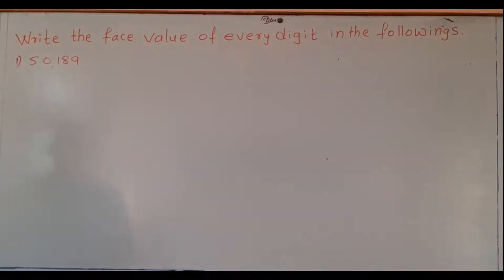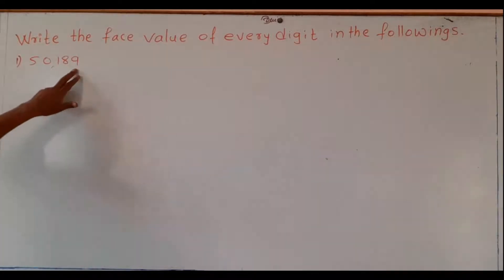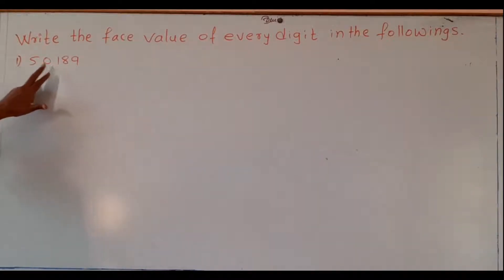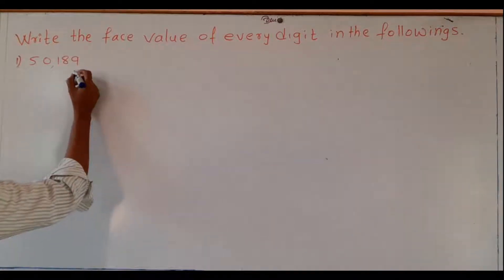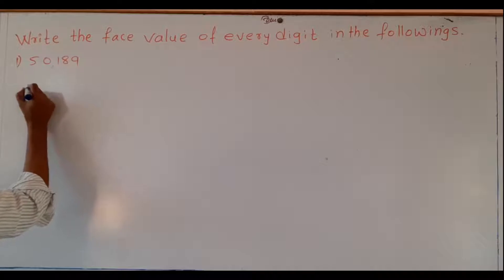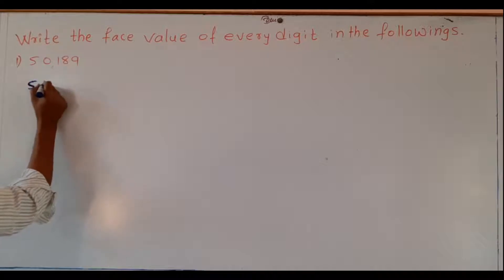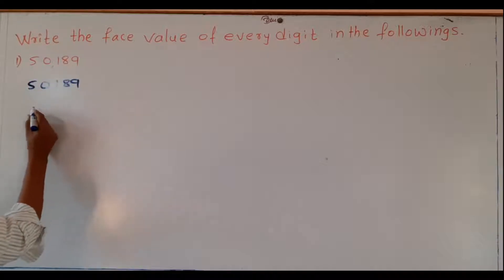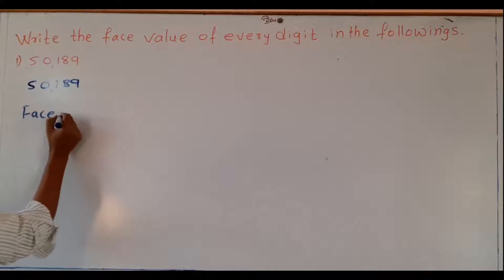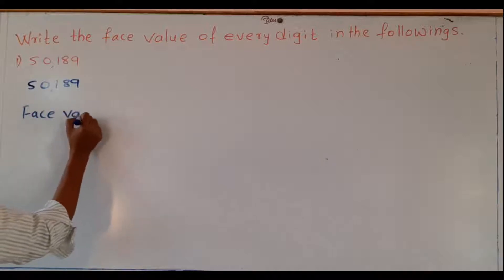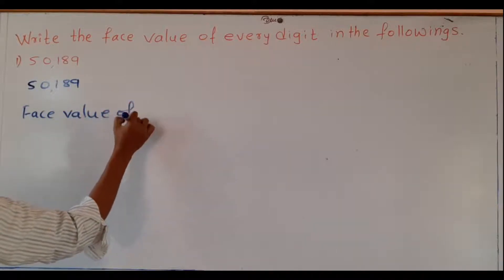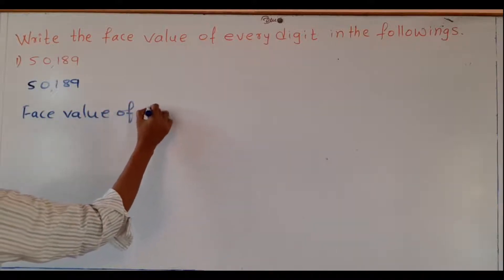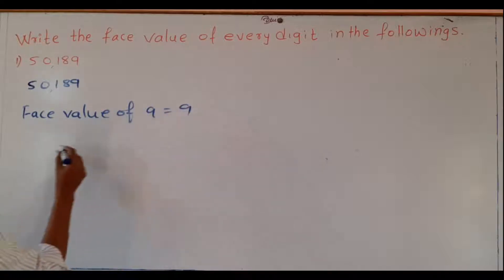Now we write the face value of every digit in a given number. See here: 50,189. Face value of 9 is 9, 8 is 8, 1 is 1, 0 is 0, and 5 is 5. In the number 50,189, face value of 9 is 9.